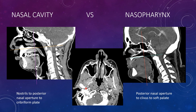Here's the torus tubarius, and here's the fossa of Rosenmuller, which is lined by squamous epithelium, which is why squamous cell carcinomas of the nasopharynx tend to originate off the midline. Whereas nasopharyngeal lymphomas start in the midline, as that is where the majority of the lymphoid tissue is.